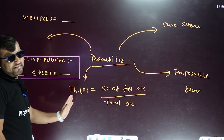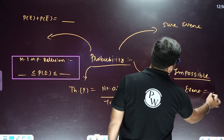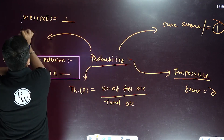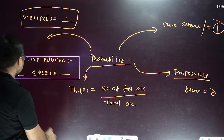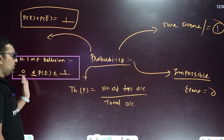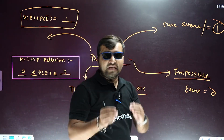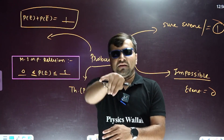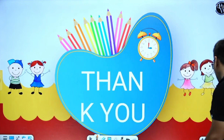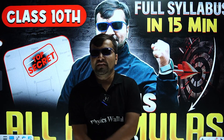Chapter 14: Probability. Theoretical probability equals number of favorable outcomes upon total number of outcomes. For an impossible event, probability is 0. For a sure event, probability is 1. For a complementary event, P(E) plus P(not E) always equals 1. The probability of any event satisfies: 0 ≤ P(E) ≤ 1. That's all — I hope you get all the formulas. We will meet in the next session, thank you so much.